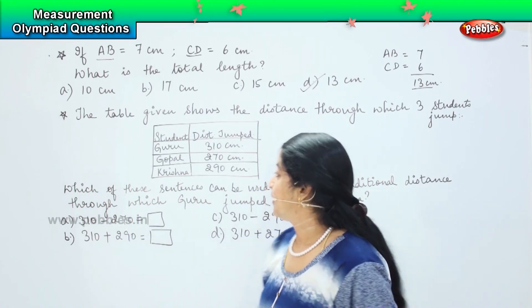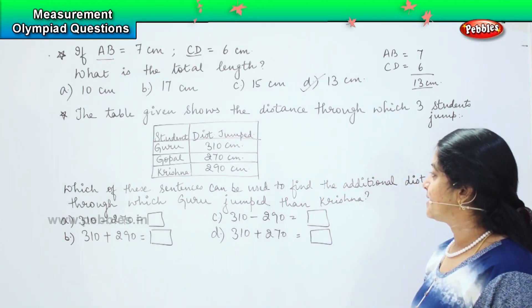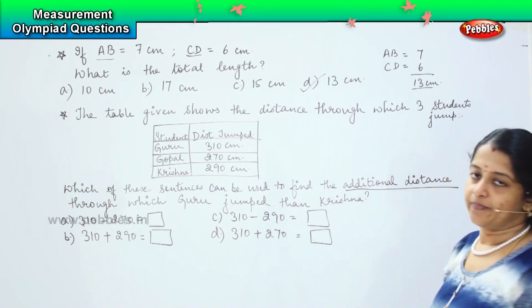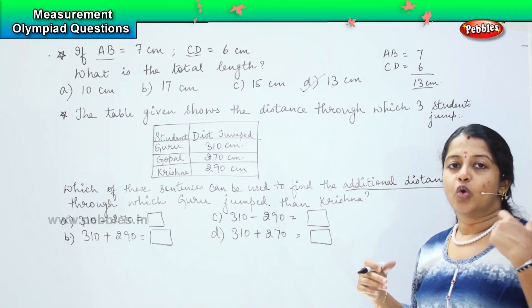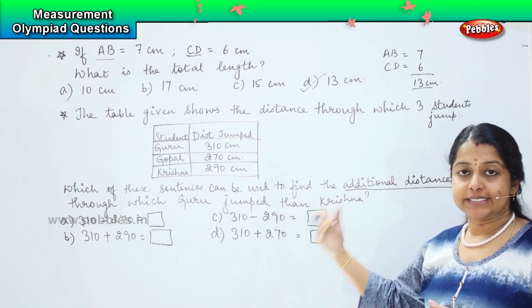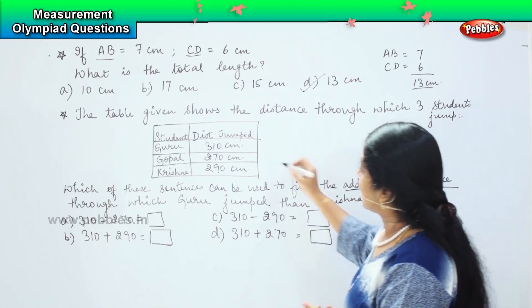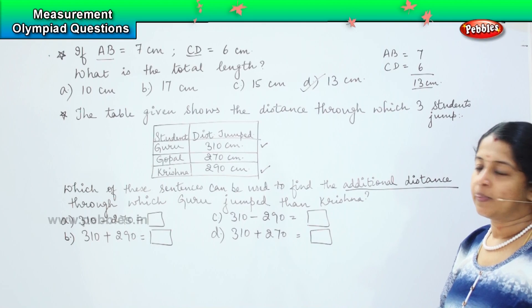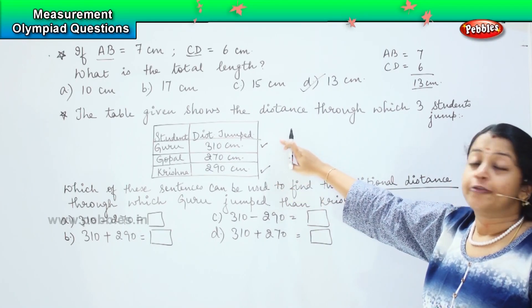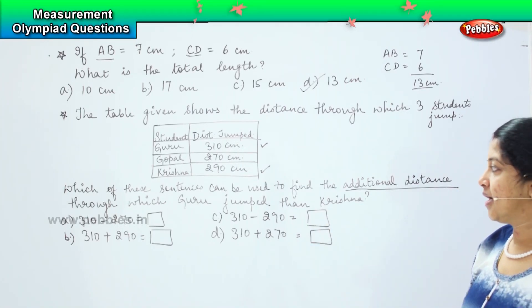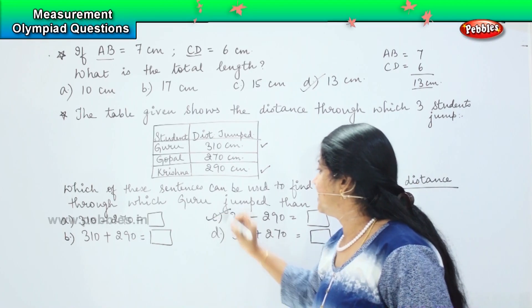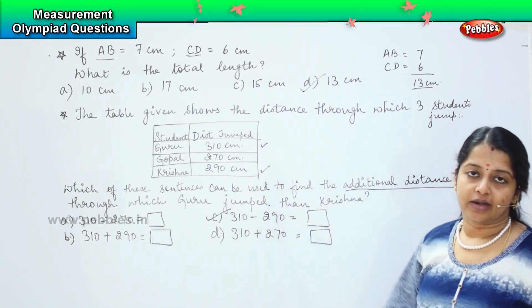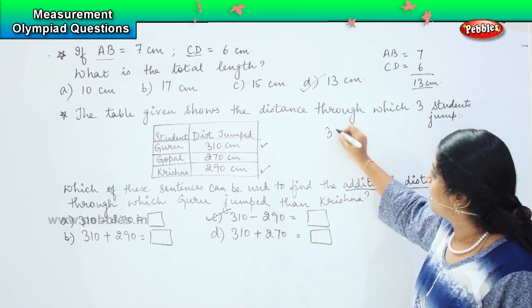Let's understand the question, children. The question asks which sentence can be used to find the additional distance through which Guru jumped than Krishna. They are asking us what is the marginal difference that Guru had exceeded over Krishna. Krishna is having 290 centimeter and Guru is having 310, so if you were to find the difference, you will be subtracting 290 from 310. Which do you think is the right option here? Excellent, option C.